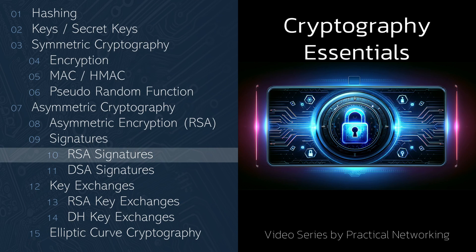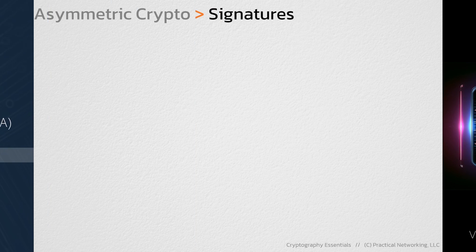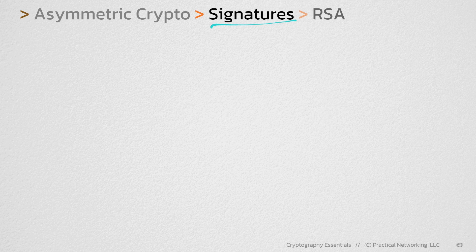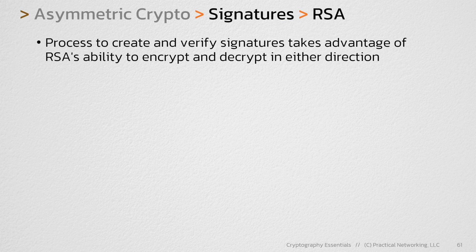RSA is just one of the two algorithms you can use to create digital signatures. The process to create a signature with RSA takes advantage of RSA's ability to encrypt and decrypt in either direction.